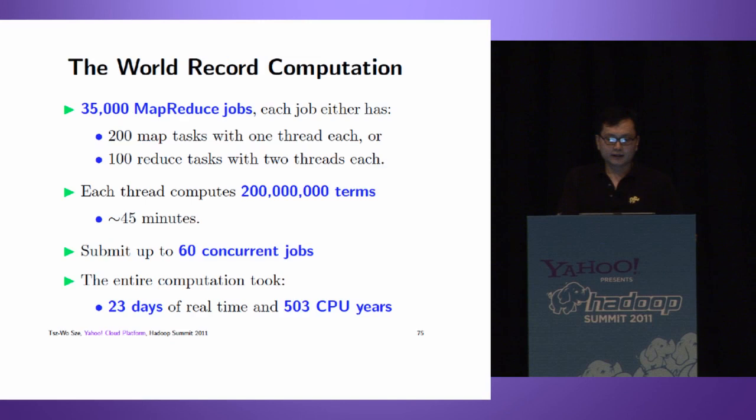For the world record computation, we had 35,000 MapReduce jobs. Each job either has 200 map tasks with one thread each, or 100 reduce tasks with two threads each. Each thread computes 200 million terms, taking about 45 minutes. We may submit up to 60 concurrent jobs. The entire computation took 23 days wall time and 503 years of CPU time.